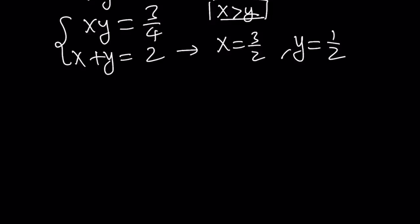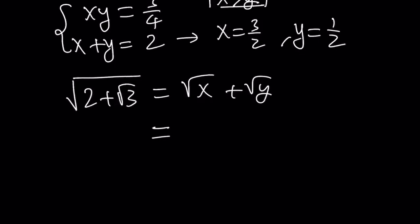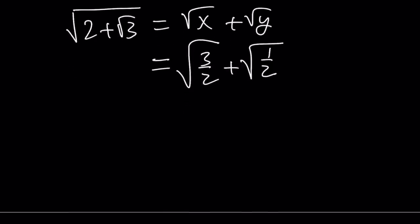So now our assumption was that this expression could be written as square root of x plus square root of y. Therefore, now we can write it as the square root of 3 over 2 plus the square root of 1 half. And now we need to simplify this a little bit.